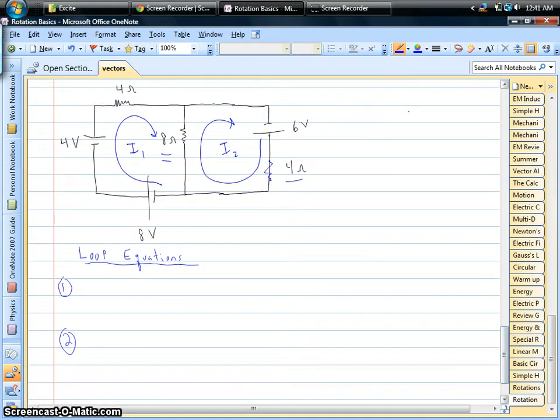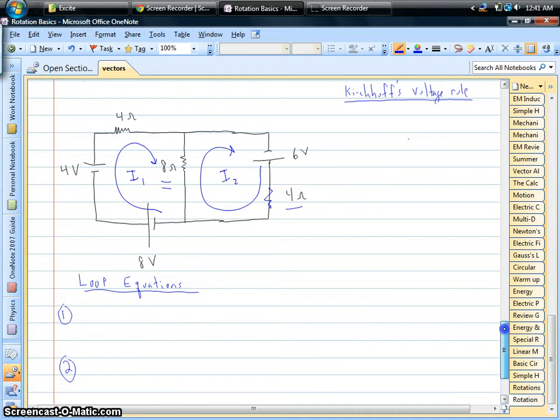So our goal is to try to figure out what I₁ and I₂ are. Well, because we have two unknowns, we know we have to have two equations, and so we'll write down what we call loop equations using the Kirchhoff rule. Well, what's the Kirchhoff rule?